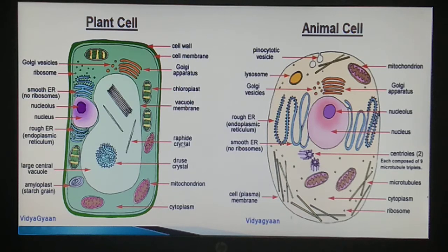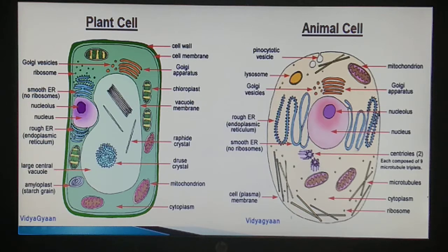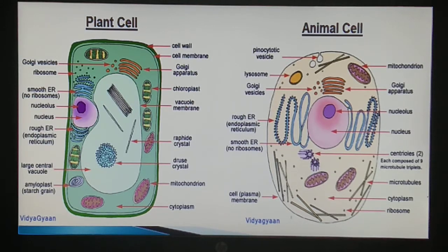The size of the animal cell is small while the size of the plant cell is larger. In the animal cell, the cell wall is absent - there is an outer covering that is the plasma membrane. But in the plant cell, we have the cell wall. These are the differences between plant cell and animal cell.